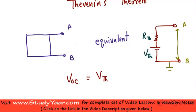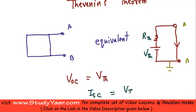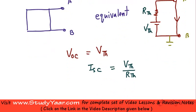Now let's say you connect an ammeter over here. When you connect an ammeter, you get a reading which represents the short circuit current flowing through AB. If you short circuit this terminal, the current flowing through AB is simply ISC, which equals Vth divided by Rth. So your short circuit current is equal to Vth upon Rth, and in other words, Rth is equal to Vth divided by ISC.